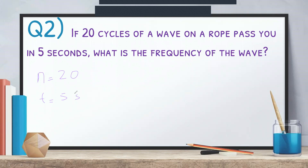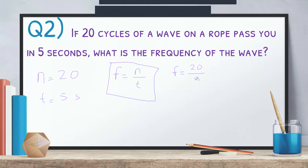Frequency is n over t, because frequency is number of waves in one second. If you have 20 cycles in five seconds, in one second you have four — four per second, five seconds, total 20 cycles. So f equals 20 over 5, and you get 4 Hz. The unit of frequency is hertz, or 4 second to the power of negative one. That is our answer for question two.